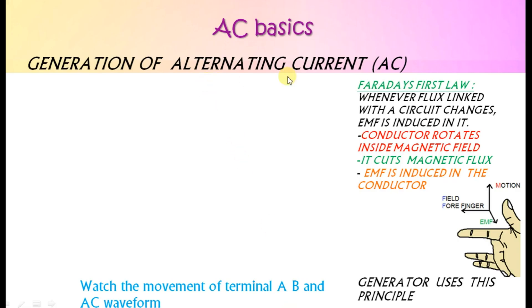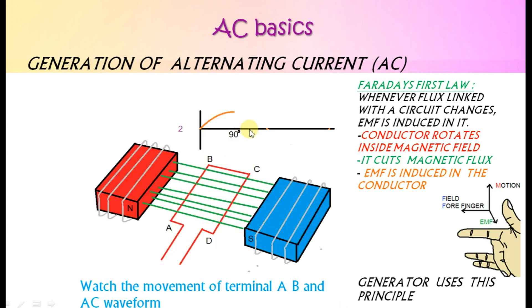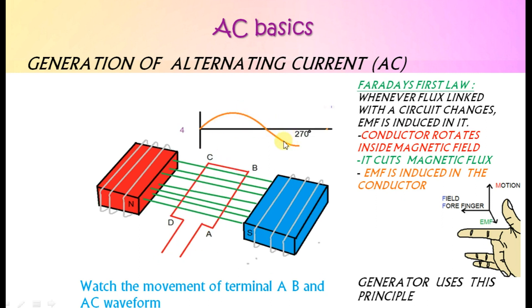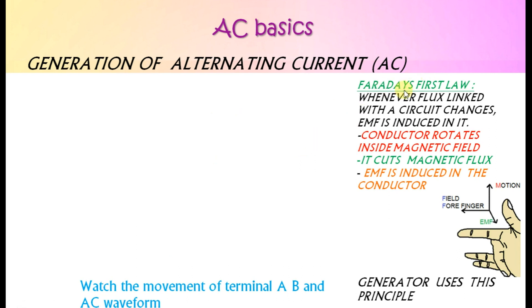Generation of alternating current: generation of AC is given in the below animation. Watch the movement of terminal AB and AC waveform. Let us now discuss its working principle. It is Faraday's first law: whenever flux linked with a circuit changes, EMF is induced in it.